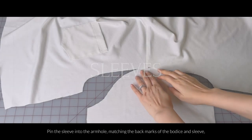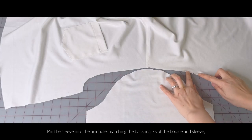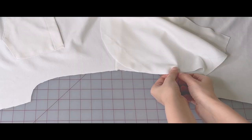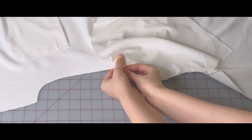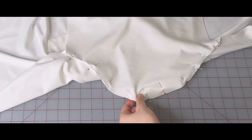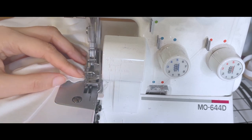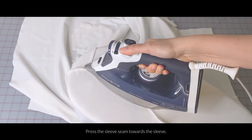Now we'll move on to our sleeves. Pin the sleeve into the armhole matching the back marks of the bodice and the sleeve and the center sleeve mark with the shoulder. And sew. Press the sleeve seam towards the sleeve.